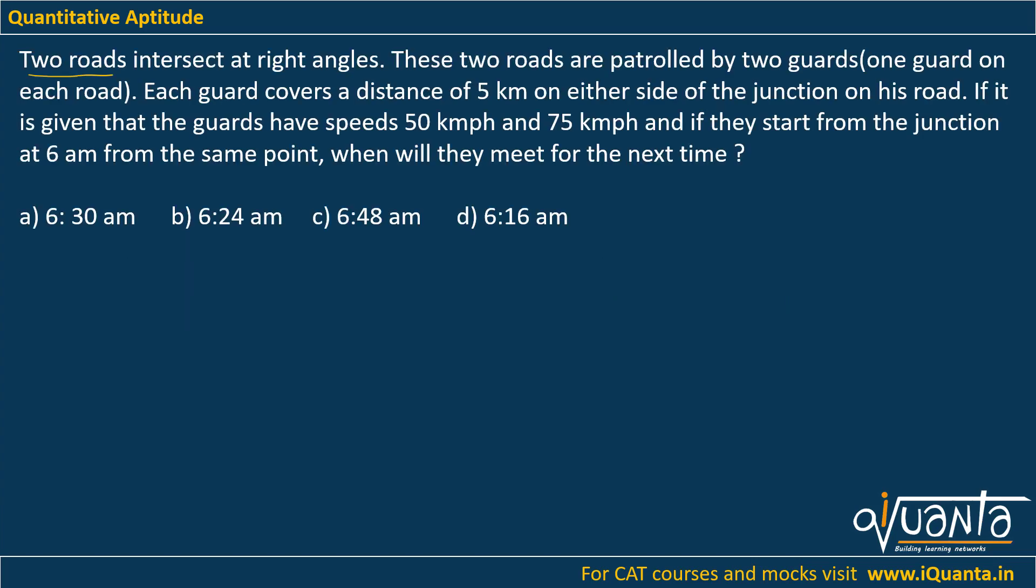Two roads intersect at right angles. These two roads are patrolled by two guards, one guard on each road. Each guard covers a distance of 5 km on either side of the junction on his road. If it is given that the guards have speeds 50 kmph and 75 kmph and if they start from the junction at 6 a.m. from the same point, when will they meet for the next time?